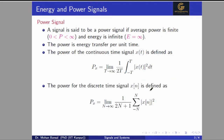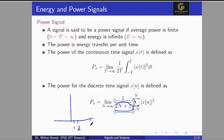For a discrete time signal, power can be computed by the limit as N tends to infinity of 1 divided by 2N+1, times the summation from n = minus N to N of |x[n]|². We use 2N+1 instead of 2N because in the discrete time signal we count samples: N samples in the negative side, N in the positive side, and 1 at zero, giving a total of 2N+1 samples.